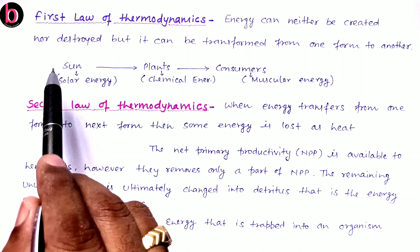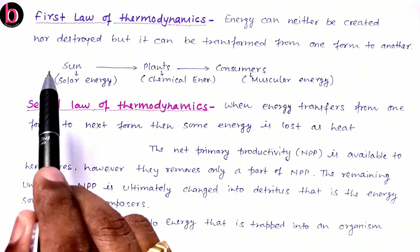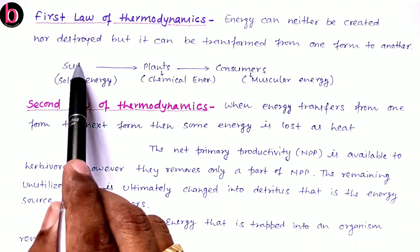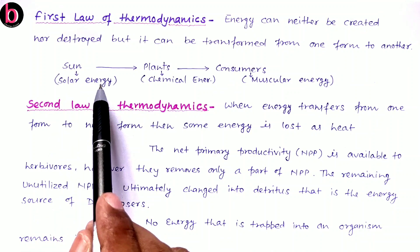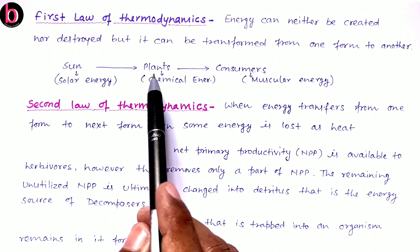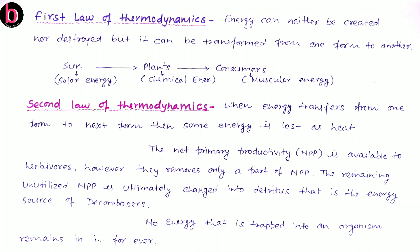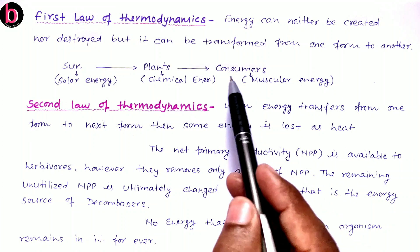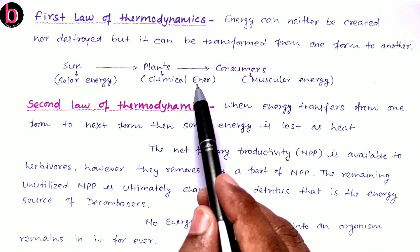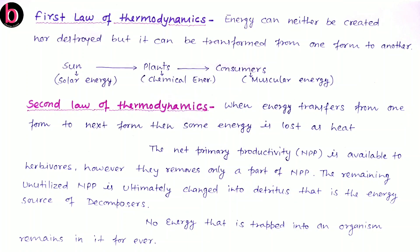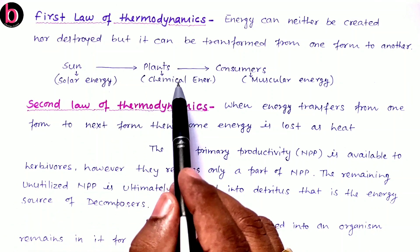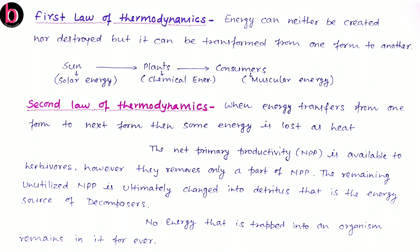From the sun, energy is released as radiant or solar energy. When this reaches Earth, plants — which are producers — convert solar energy into chemical energy, stored in the form of glucose. When consumers feed on plants, they convert this chemical energy into muscular energy. So we can see the transformation of energy from solar to chemical, and from chemical to muscular.